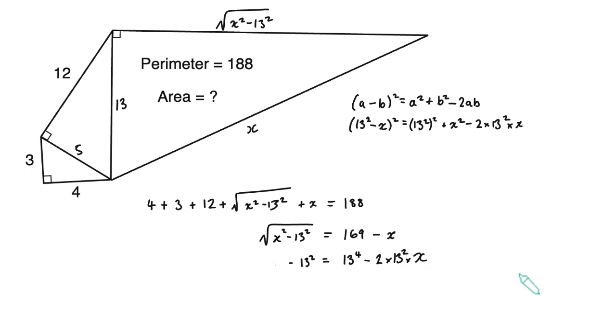But in fact, we can see that there is a common factor of 13 squared all the way through the terms in this equation. If I divide minus 13 squared by 13 squared, I get minus 1. 13 to the four divided by 13 squared just leaves me with 13 squared.